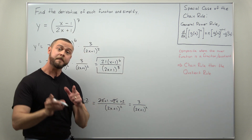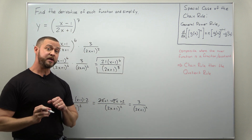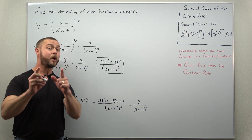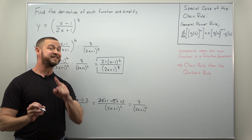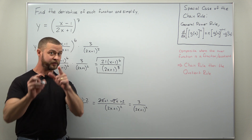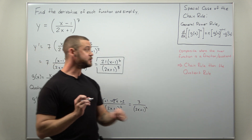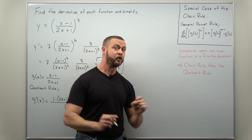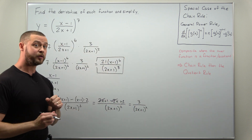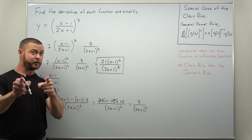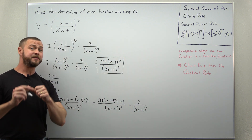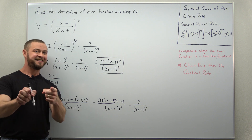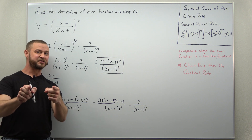That is our derivative, simplified as far as we can take it. Hope you enjoyed this problem where we combined the chain rule — using the general power rule version — with the quotient rule. If you enjoyed the content, support the channel by liking and subscribing.